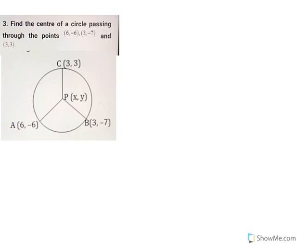Find the center of a circle passing through the points (6, -6), (3, -7), and (3, 3). If we have the circle, we have P as the center with coordinates (x, y), and we have these three points: A, B, and C.